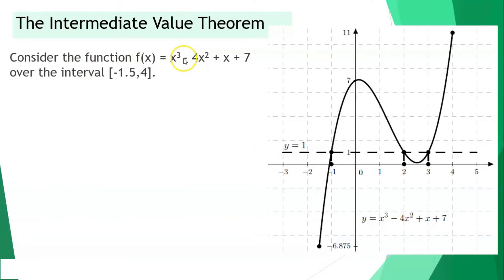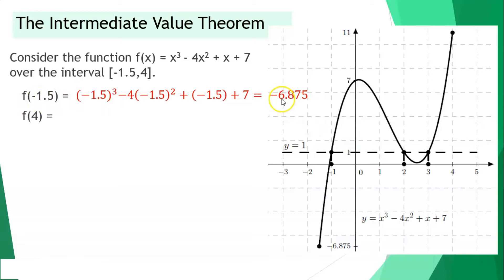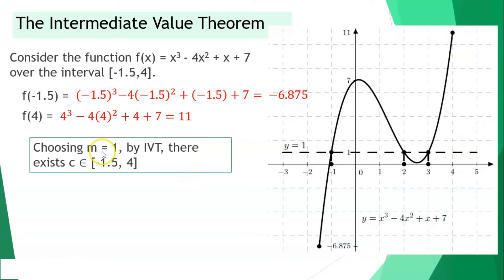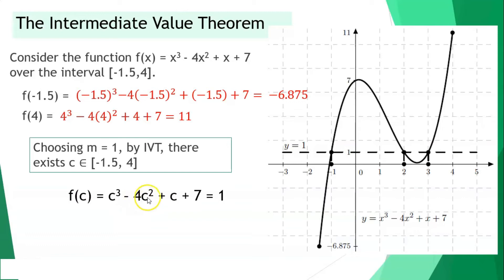Consider the function f of x is equal to x cubed minus 4x squared plus x plus 7 over the interval from negative 1.5 until 4. If our x is negative 1.5, the value for y is negative 6.875. If our x is positive 4, the value for y is positive 11. Choosing m as 1. By IVT, there should exist a value of c within negative 1.5 until positive 4. So we'll have c cubed minus 4c squared plus c plus 7 is equal to 1.